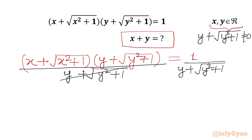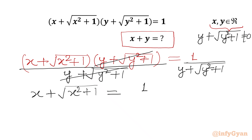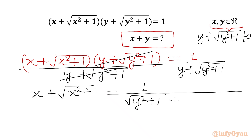I can cancel y plus square root of (y squared plus 1) from the LHS. So on the LHS we have x plus square root of (x squared plus 1), and on the RHS we have 1 over square root of (y squared plus 1) plus y. Now I will rationalize the denominator.